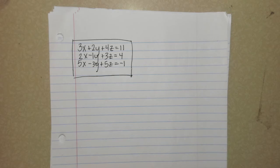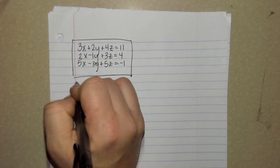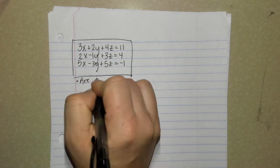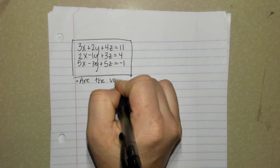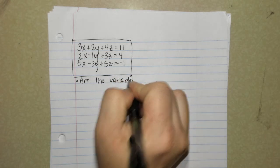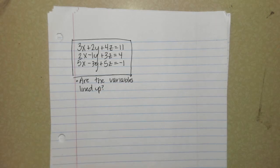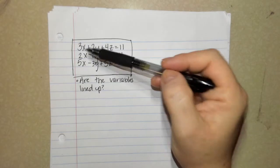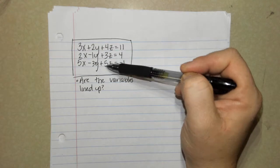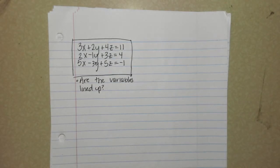So the first thing I want you to recognize is, are the variables lined up? What do I mean by that? Are the x's, the y's, and z's organized nicely? Before we can do anything, that's the first thing you have to ask yourself. If they weren't, we'd want to rearrange them so they are all lined up correctly.